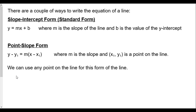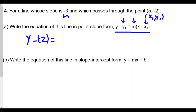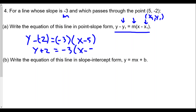So our point is x1 equals five, y1 equals negative two, and our slope is negative three. Plugging into point-slope form: y minus negative two equals negative three times the quantity x minus five. Simplifying the left side, we get y plus two equals negative three times the quantity x minus five. This is the equation of the line with slope negative three passing through the point five, negative two in point-slope form.